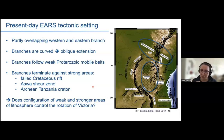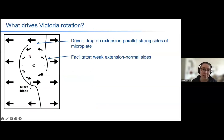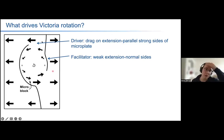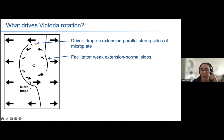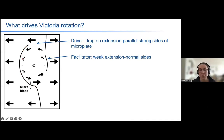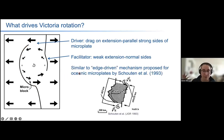We were wondering whether this configuration of lithospheric weaker and stronger areas actually controls the rotation of Victoria. Our hypothesis was that the motion of the surrounding major plates — Nubia on the left and Somalia on the right — is transferred along the strong sides of the microplate to the microplate itself. It's the drag on these extension-parallel strong sides of the microplate that is driving the rotation, and then the rotation is facilitated by these weaker extension-normal sides where the crust fails. This hypothesis was inspired by the edge-driven mechanism proposed for oceanic microplates like the Juan de Fuca microplate in 1993.